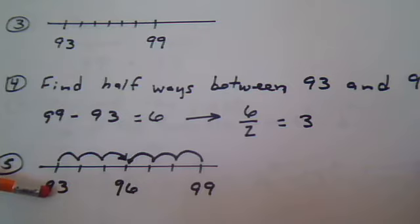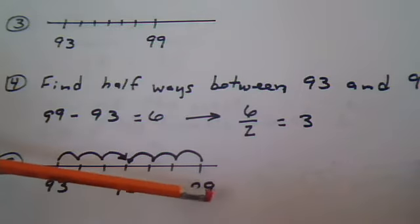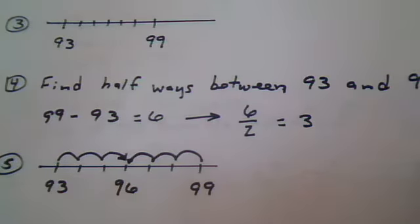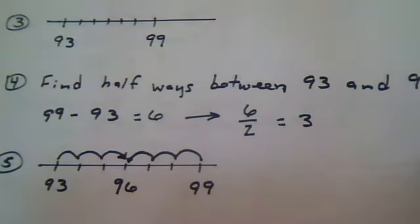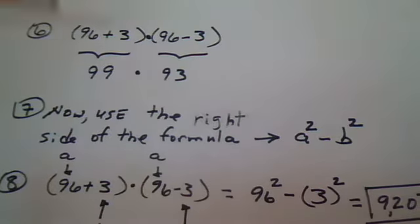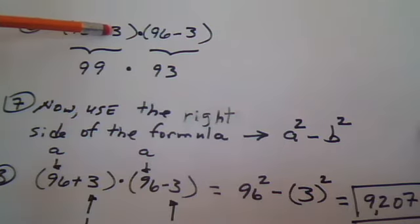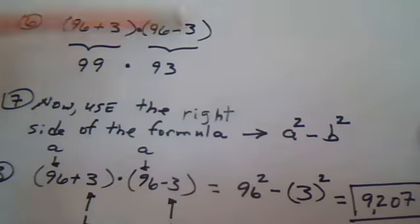93 plus 3 gives you 96. 99 minus 3 gives you 96. 96 is the halfway point. Now what we're going to do is rewrite 99 as 96 plus 3 and write 93 as 96 minus 3.